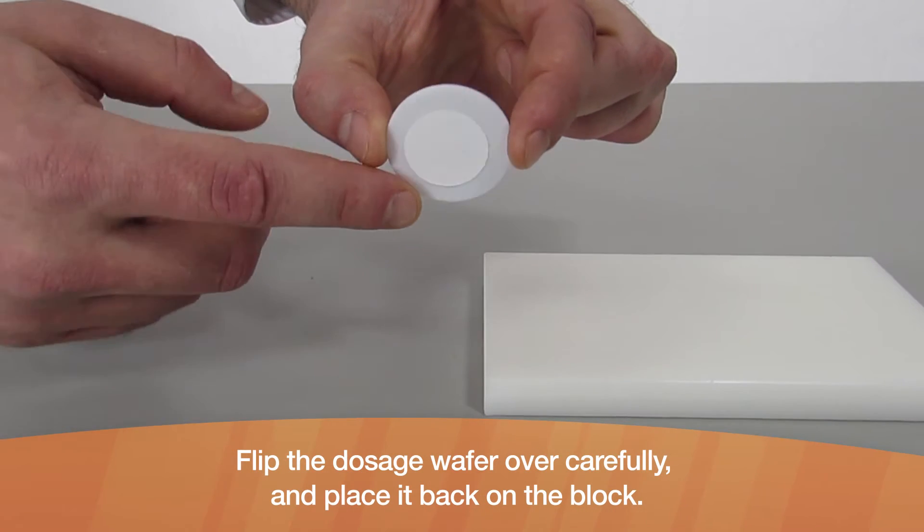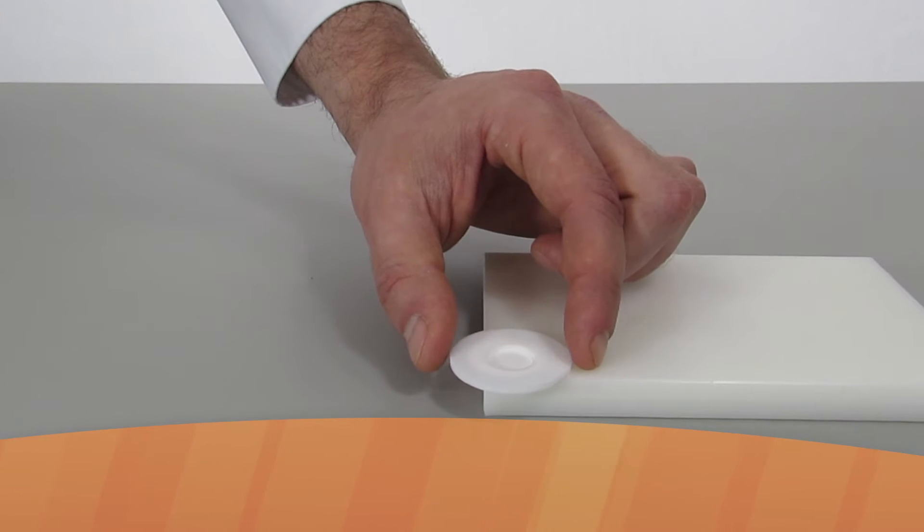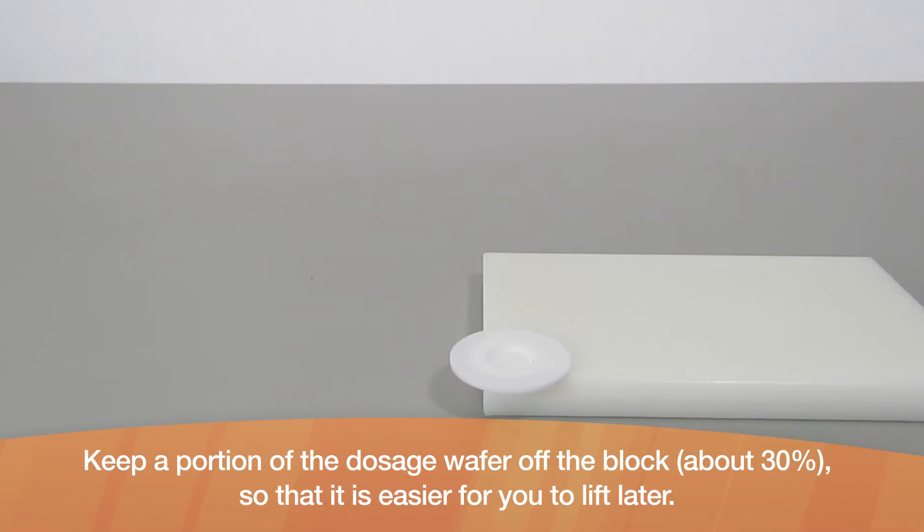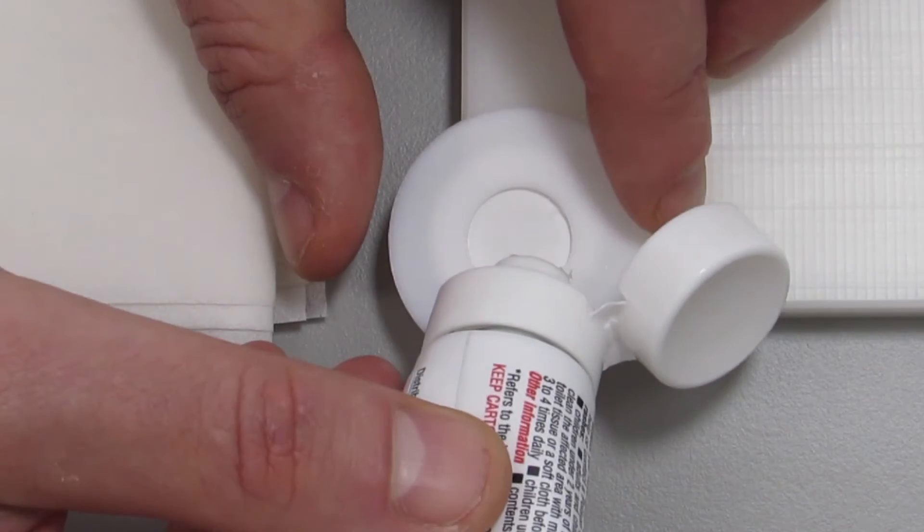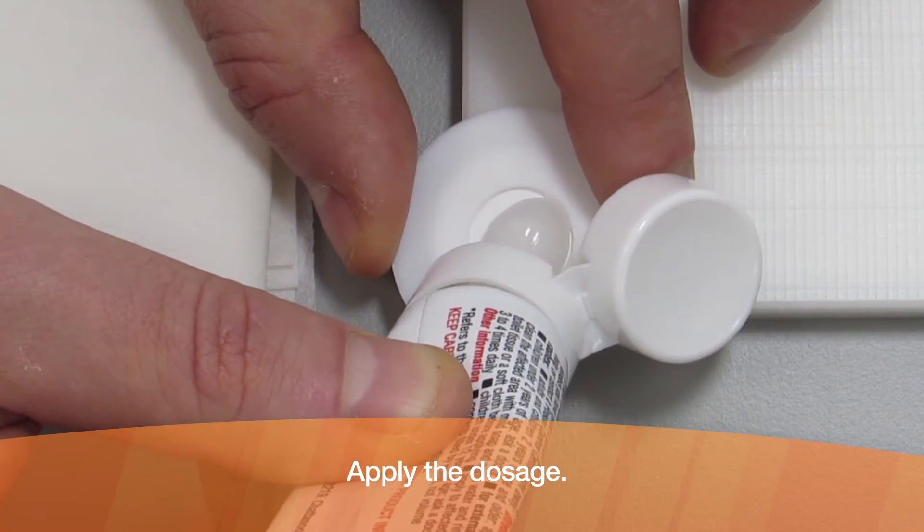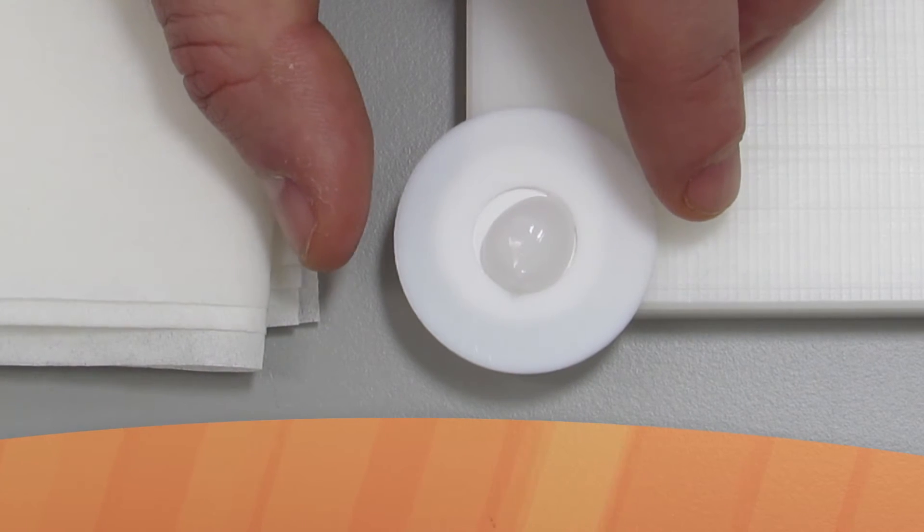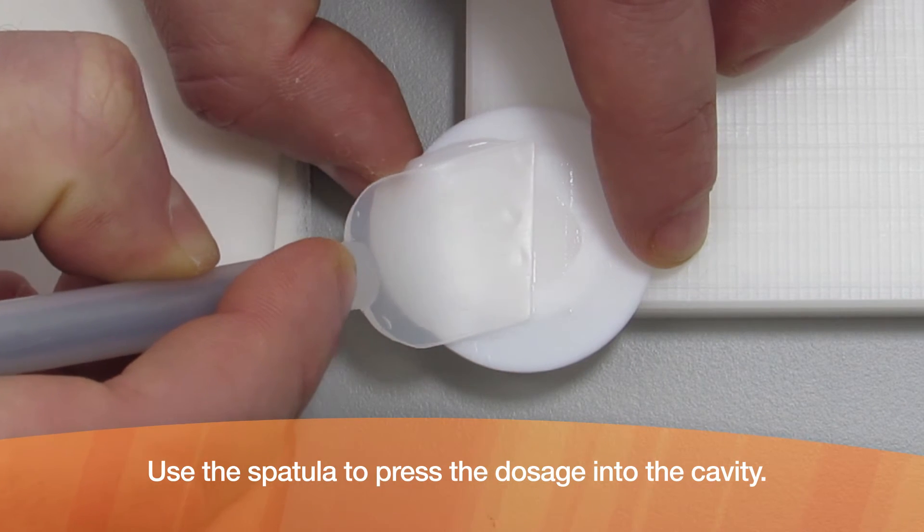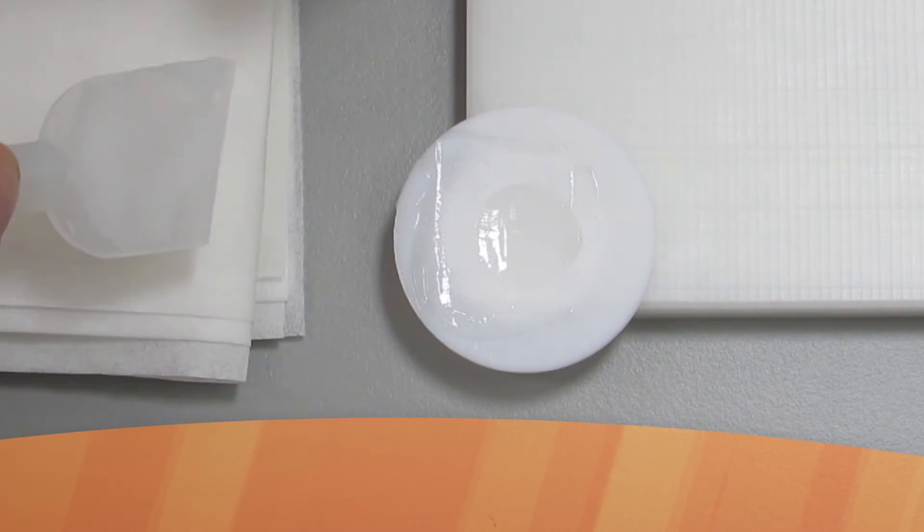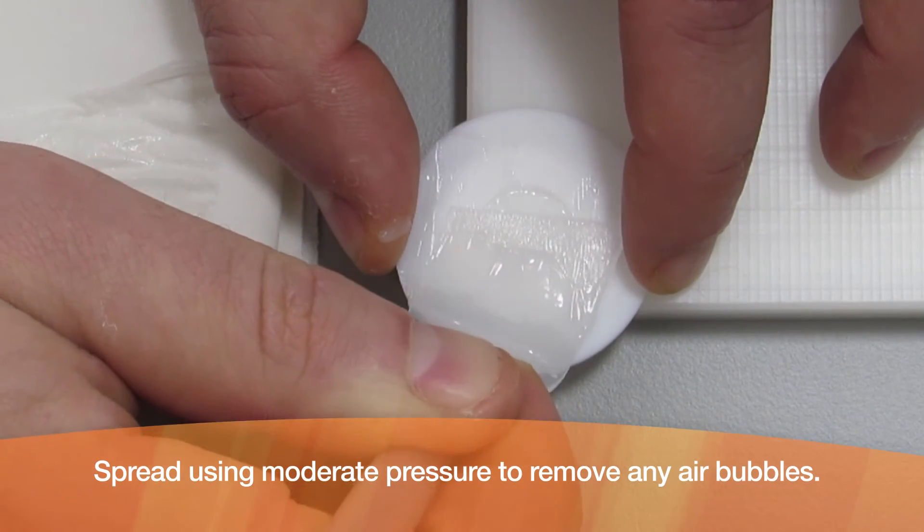Flip the dosage wafer over carefully and place it back on the block. Keep a portion of the dosage wafer off the block so that it is easier for you to lift later. Apply the dosage. Use the spatula to press the dosage into the cavity, spreading using moderate pressure to remove any air bubbles.